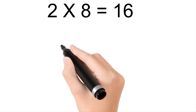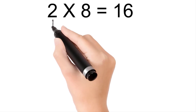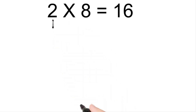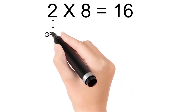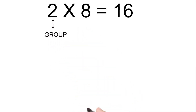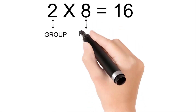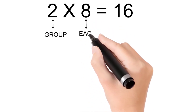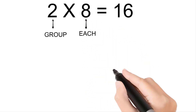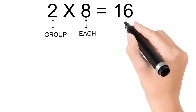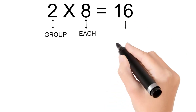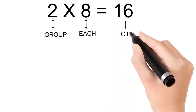Two times eight is sixteen. Two is group, eight is each, and sixteen is total.